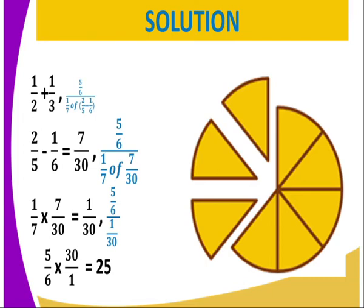So we are going to get 1 over 7 times 7 over 30. Whereby, we are going to get by 7, 1, by 7, 1, to get 1 over 30. So in our case, we are going to divide 5 over 6, which is the numerator. We divide by the denominator, which is 1 over 30. And remember, when we are dividing, we get the reciprocal of the denominator.